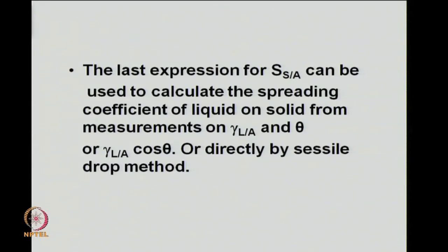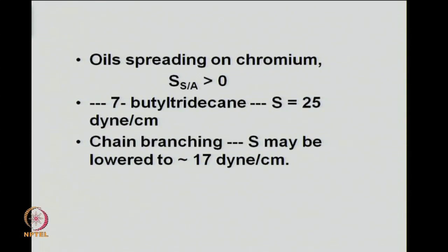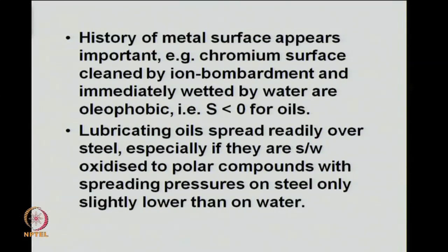There is yet another alternative for determination of the negative spreading coefficient — a method based on a large drop of liquid called the CECIL drop method. Looking at some numbers: if we consider oil spreading on chromium, the spreading coefficient is positive. For 7-butyl-tridecane, the spreading coefficient works out to be 25 dynes per centimeter. With chain branching instead of a straight alkane, spreading is somewhat reduced to about 17 dynes per centimeter — still positive but reduced. The history of the metal surface is also important.